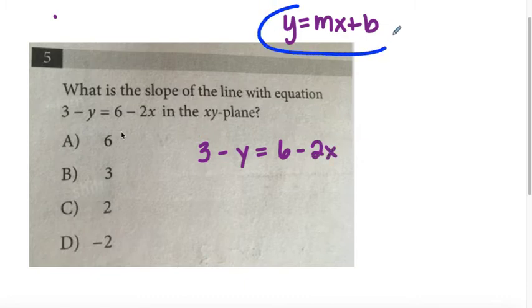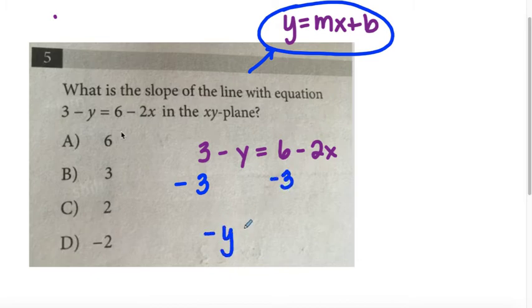Because y equals mx plus b has it where y is isolated. So I'm going to subtract the 3 to the other side and add it to its like term. So now I have negative y equals 3 minus 2x.